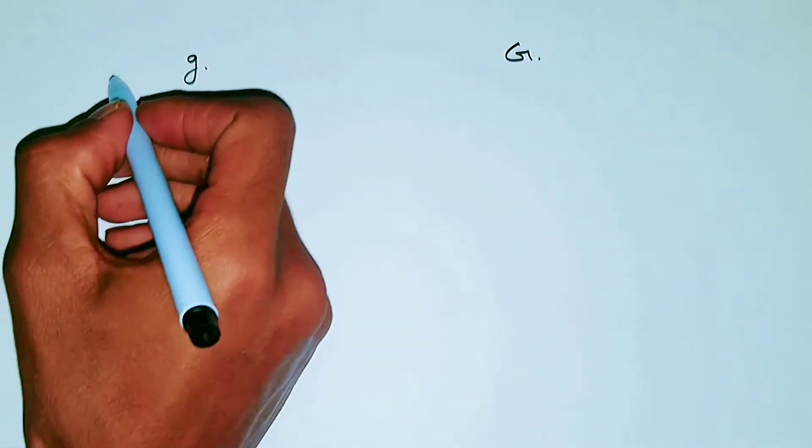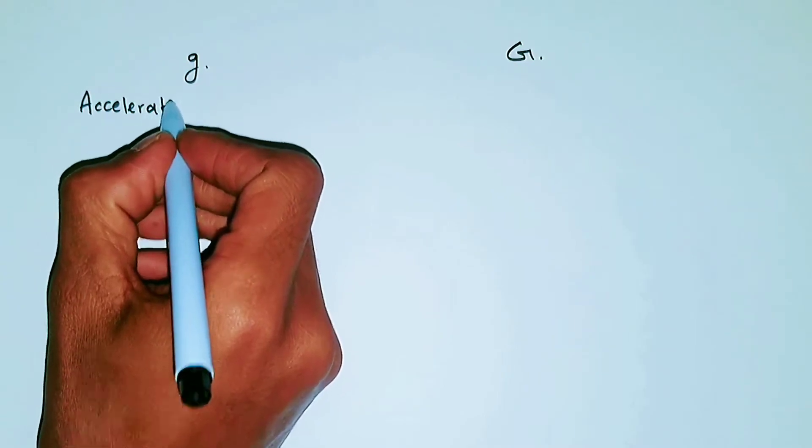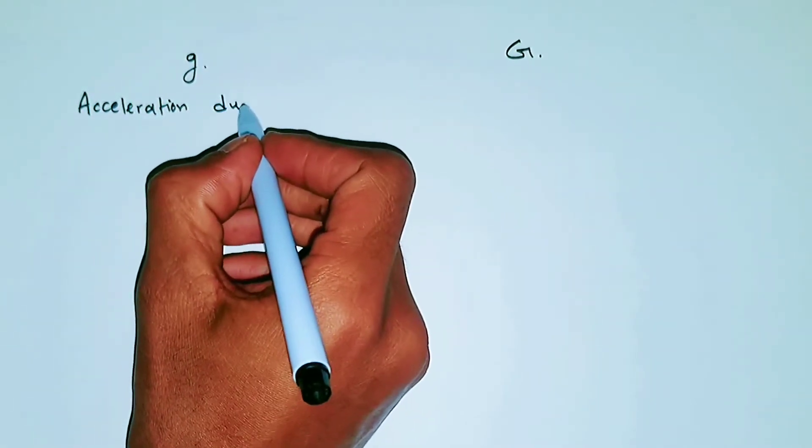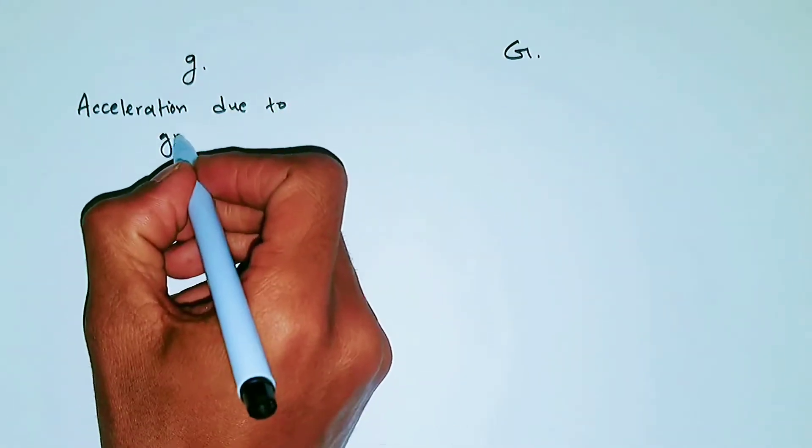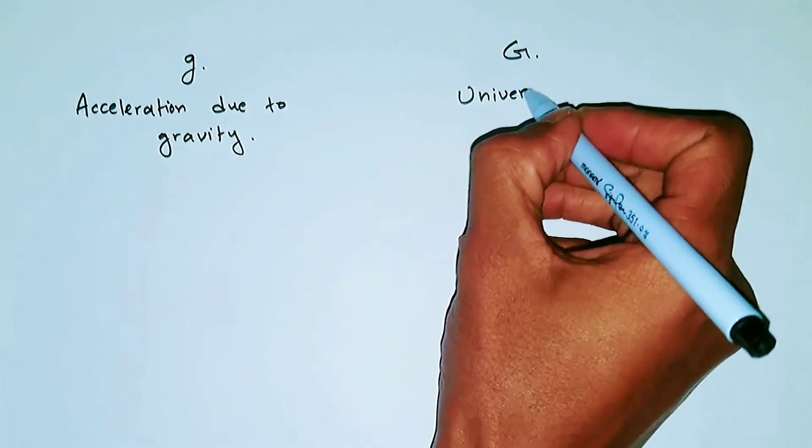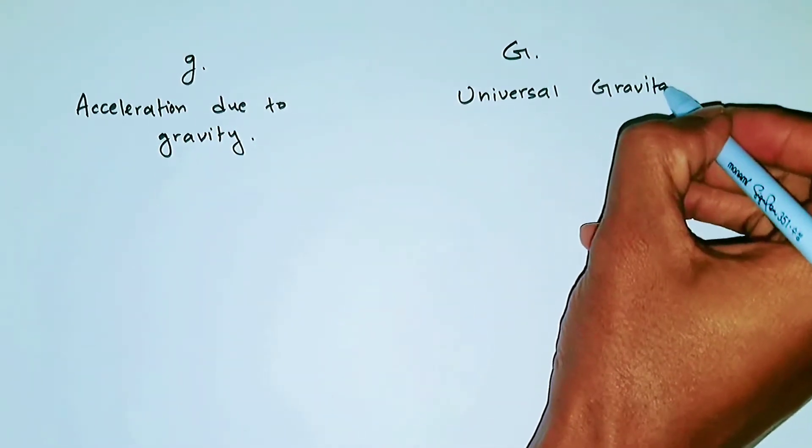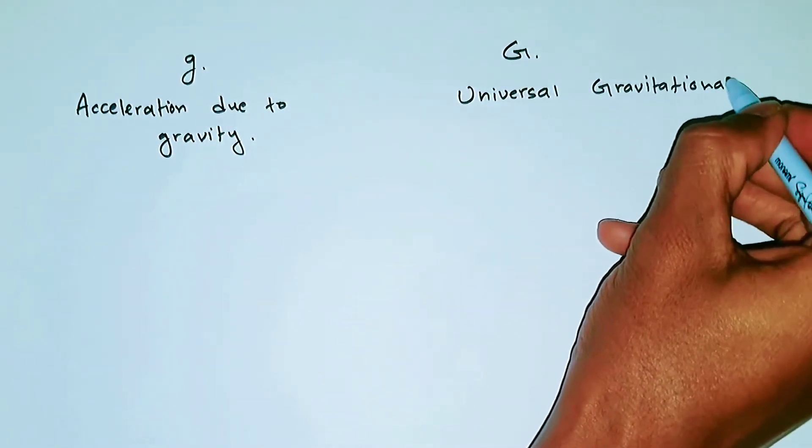So the small g is actually acceleration due to gravity, and our big G is universal gravitational constant.